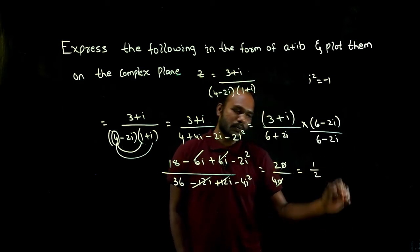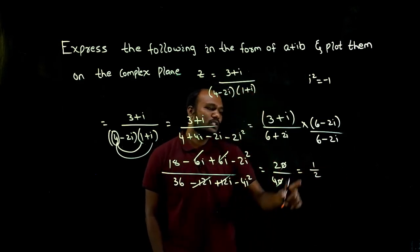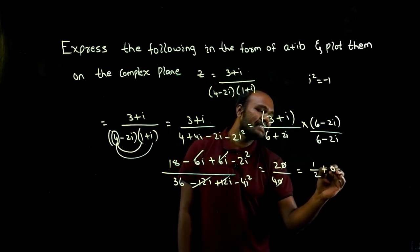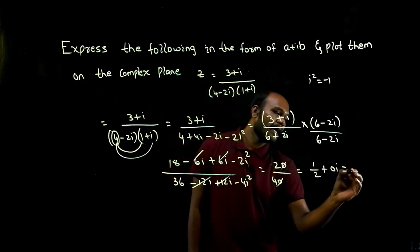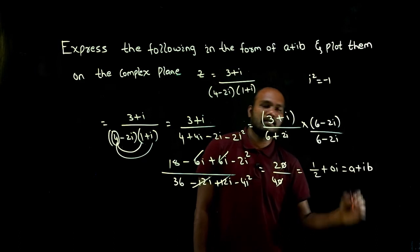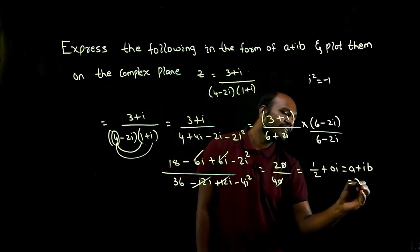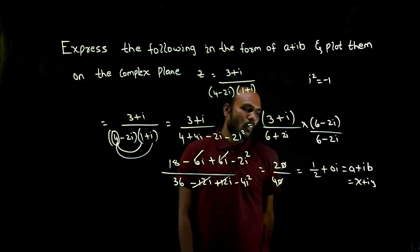So what we have is 20 by 40. If I cancel this, we get 1 by 2. This is only the real part, so I can write it as 1 by 2 plus 0i. If I compare this with a plus ib, and also we can write this as x plus iy.